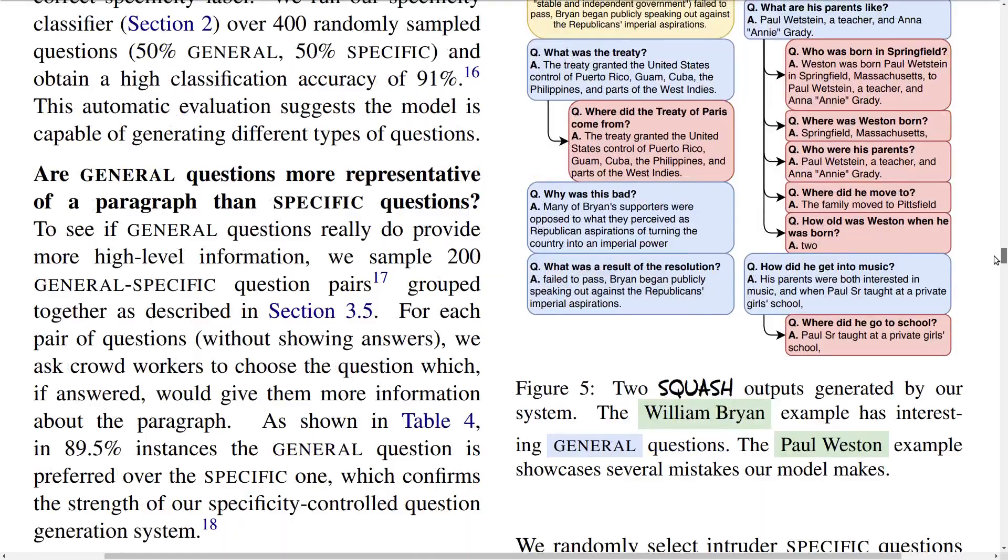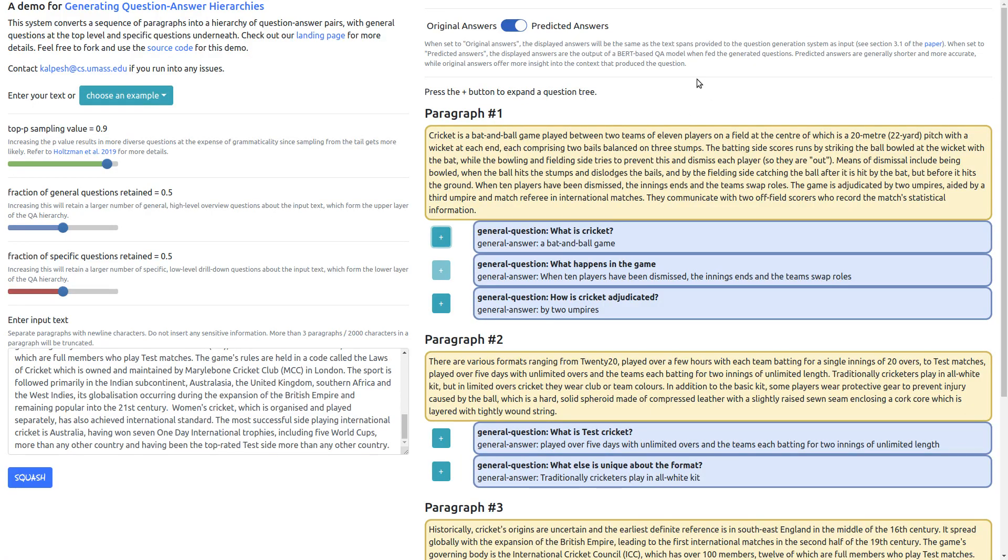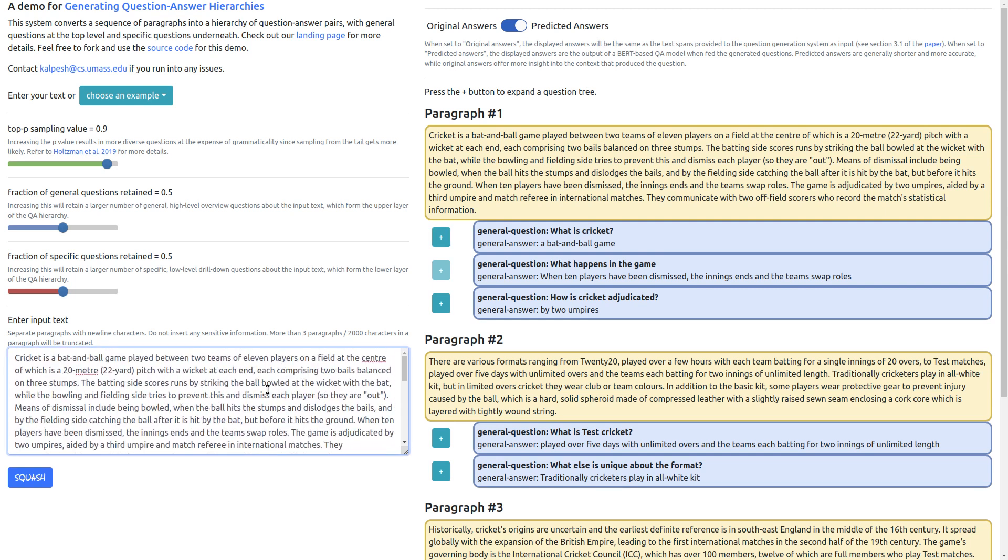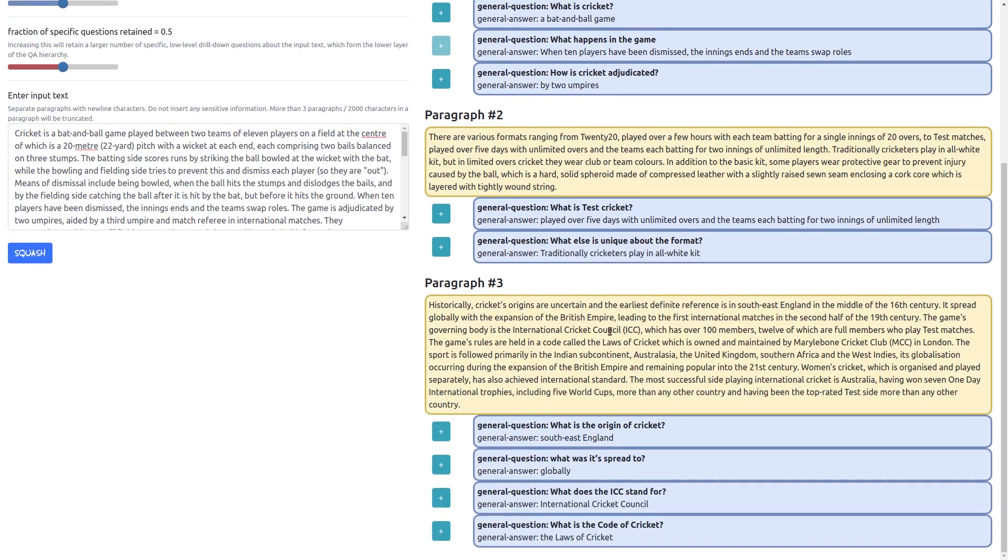The authors actually do a really cool demo that I'm going to show you now. It's available on the internet and if you go to the paper you're able to access it. So here you have a text box where you can input an article which can consist of multiple paragraphs. Here I have chosen an example of the article on the game cricket. You also have some options to control some hyper parameters like the sampling value top-p, because they're using top-p sampling instead of standard beam search to generate their questions because it results in more diverse questions being generated.